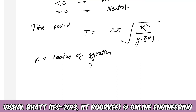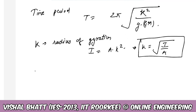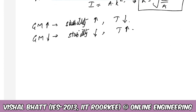The radius of gyration k is given by the formula I = A × k², so k equals the square root of I divided by A. The radius of gyration is constant for a particular geometrical figure. If we increase the GM value, meaning we increase stability, the time period decreases. If GM is reduced, the time period of oscillation increases.